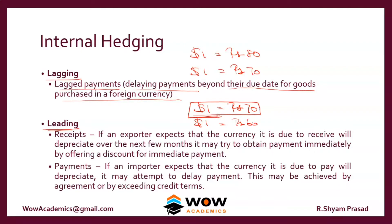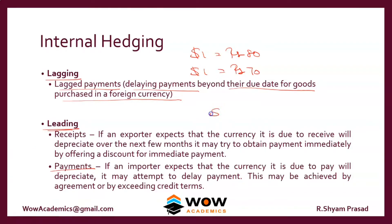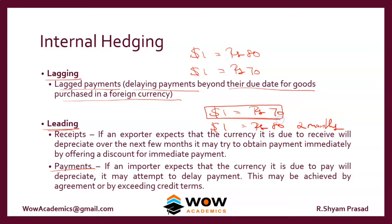Leading can also apply to payments. For example, the current rate is one dollar to 70 rupees, but you feel it might move against you in two months. Even though the customer has given you two months to make the payment, you pay as soon as possible to lock the exchange rate at 70 rupees. If you feel the price might go to 80 rupees per dollar, it is better to make the payment now at 70. That is called leading payments.